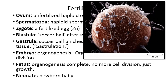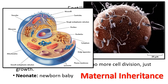Here we see spermatozoa attacking an ovum. Eventually one will get inside. The first spermatozoon to insert its head into the ovum causes a change in the plasma membrane — the outer layer of the cell — which prevents any other sperm from getting inside. In theory, it is impossible for more than one spermatozoon to fertilize a single egg.